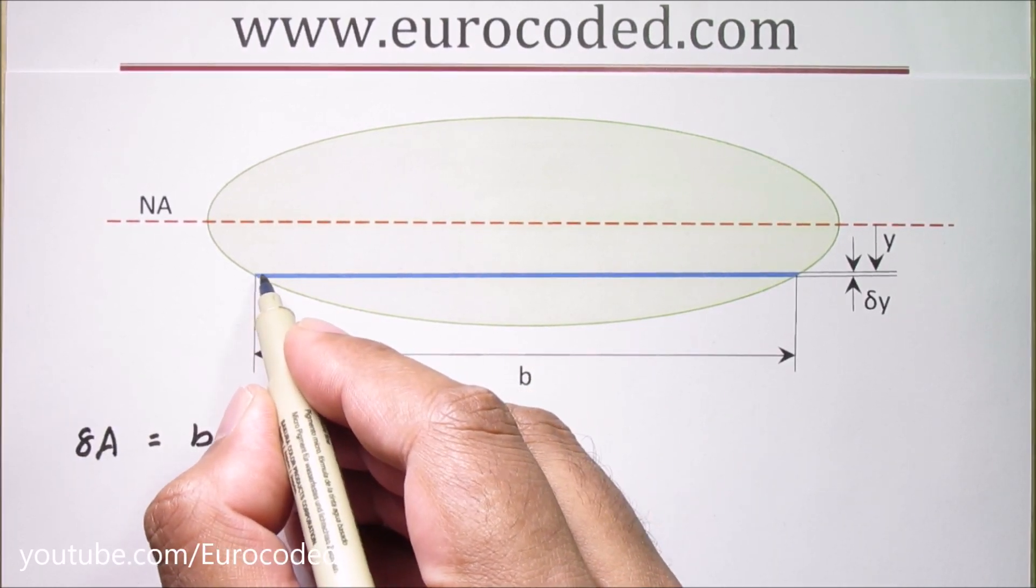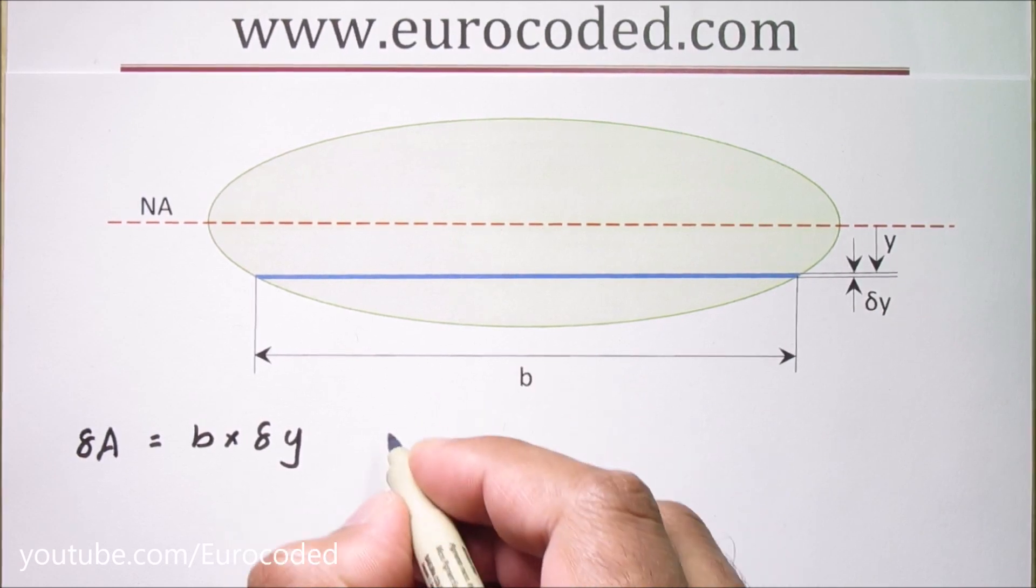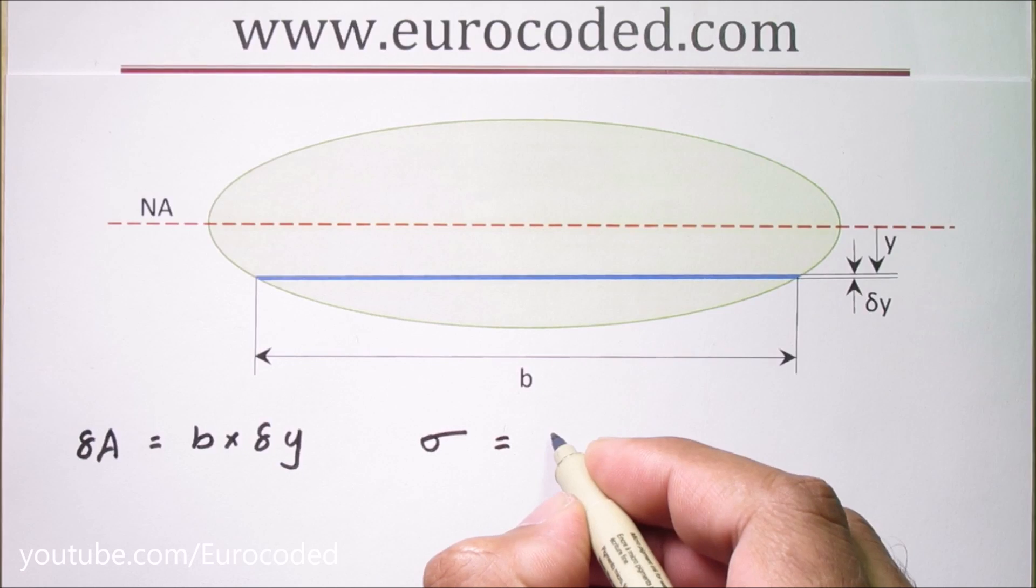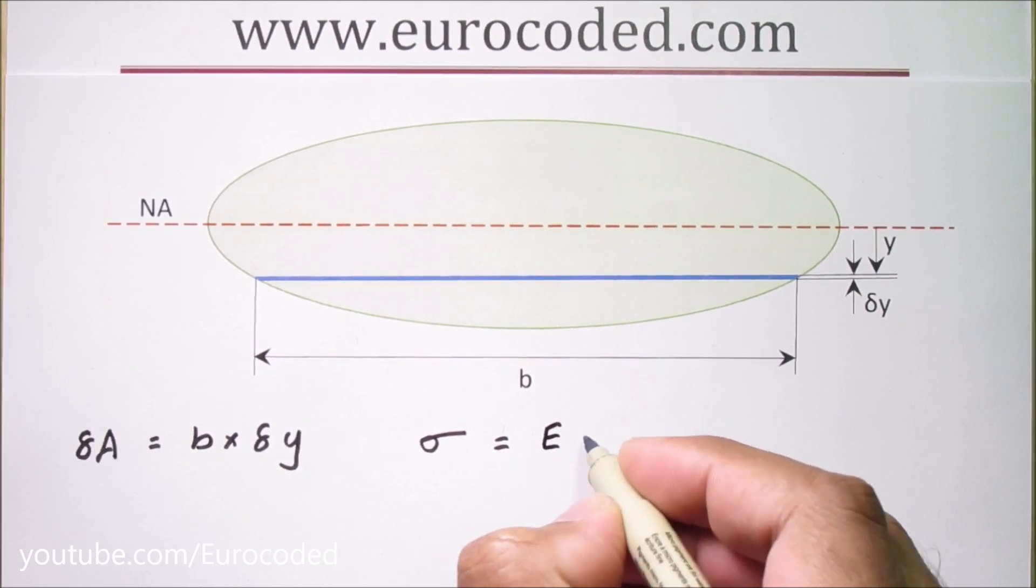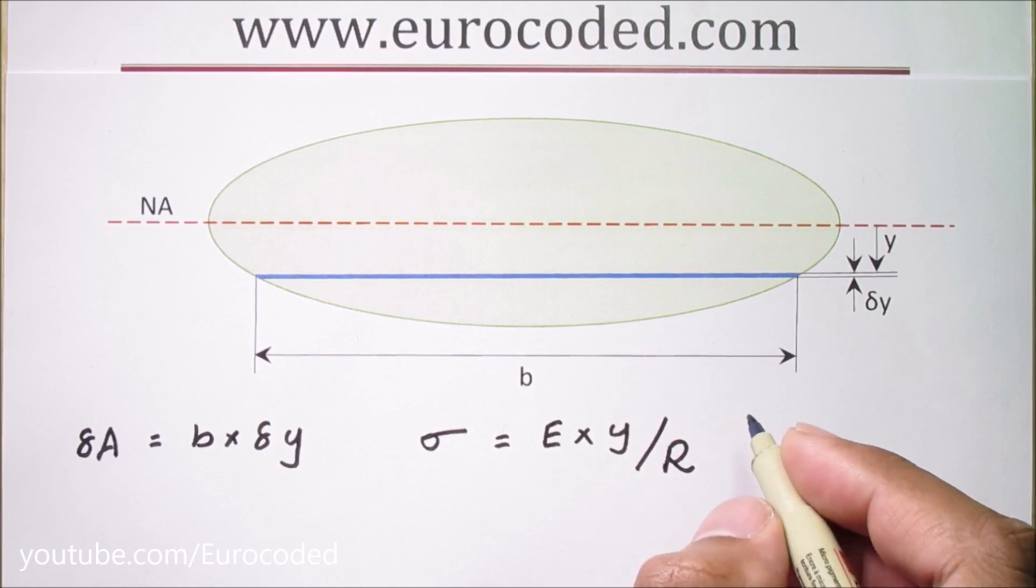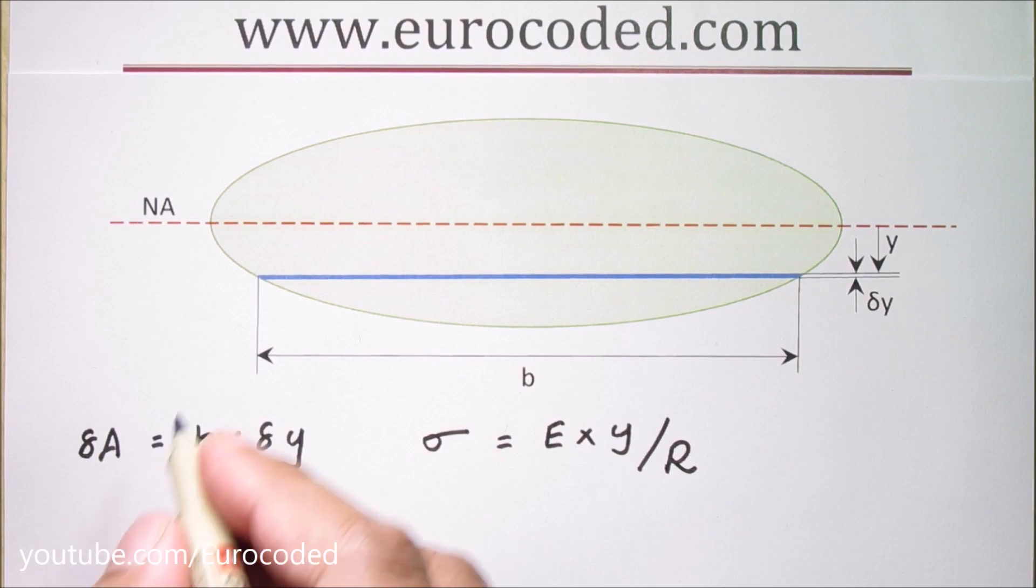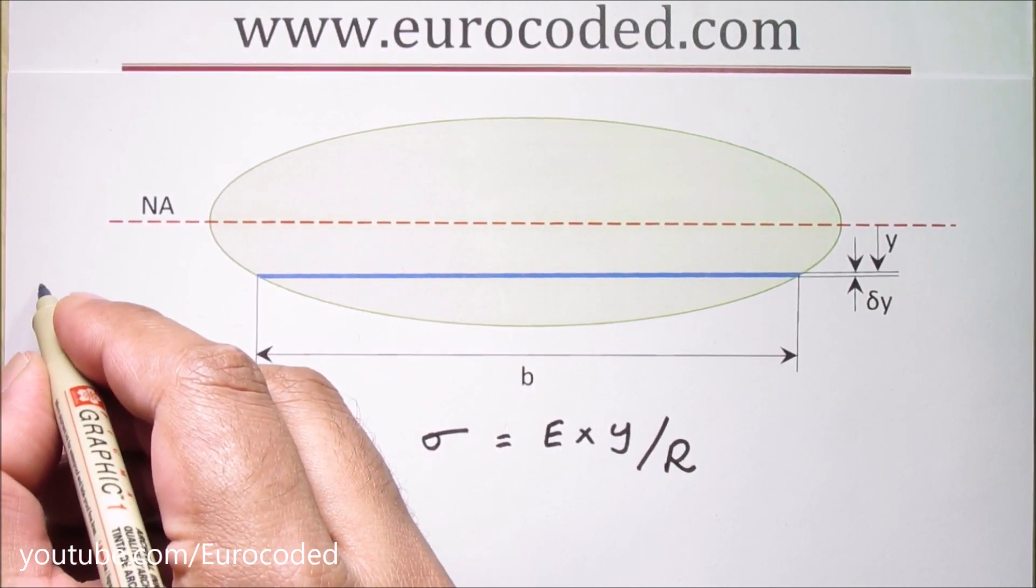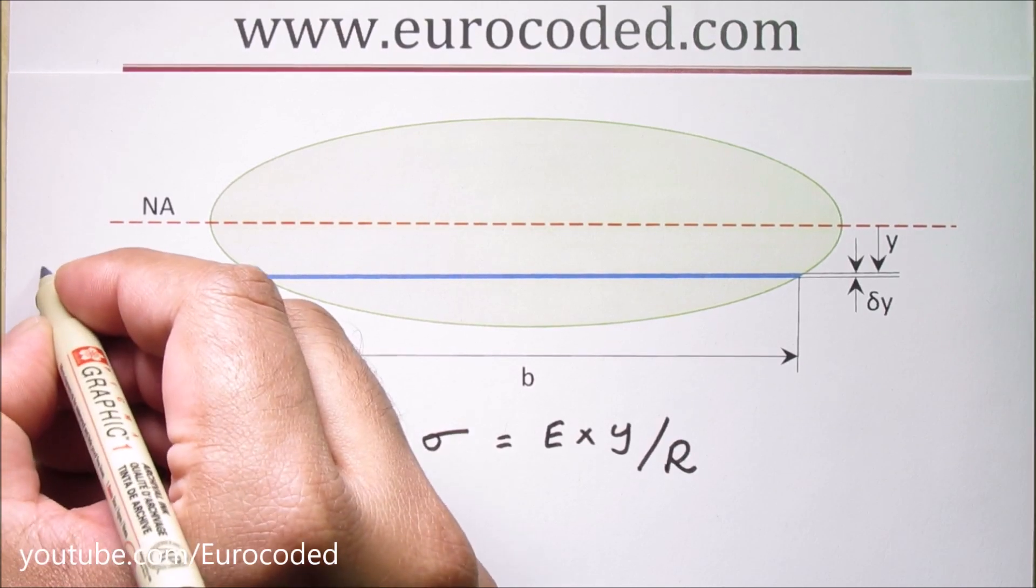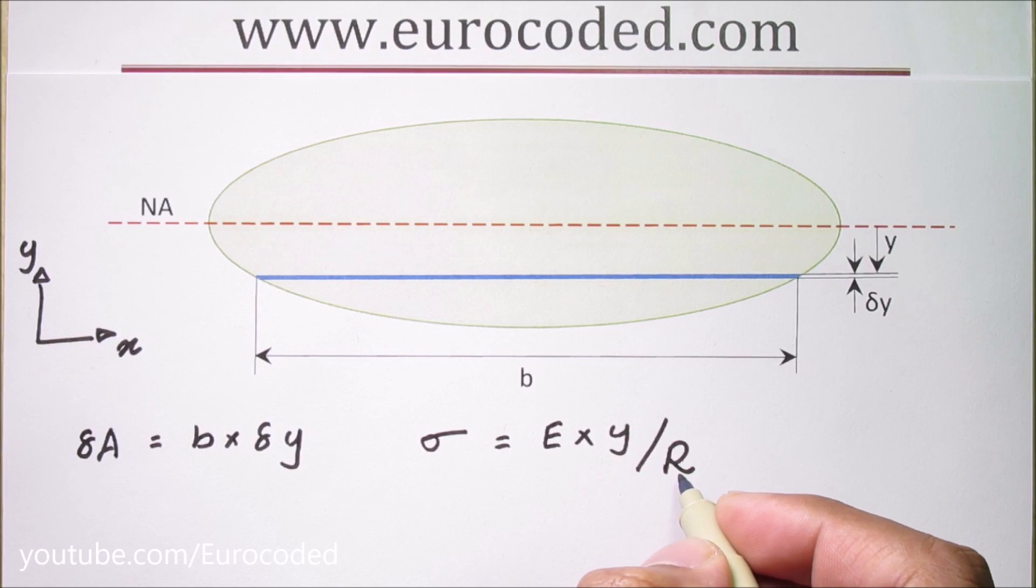The stress on this very small strip can be written as sigma which is equal to modulus of elasticity times y over r. y is the distance from neutral axis in the xy plane and r is the radius of curvature.